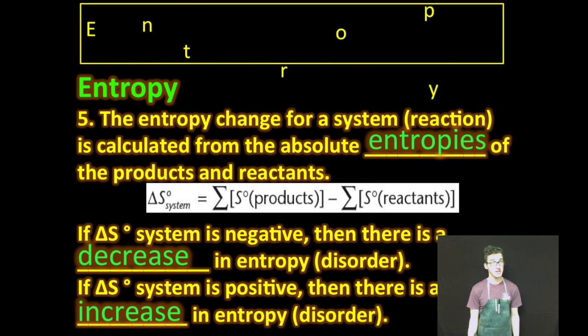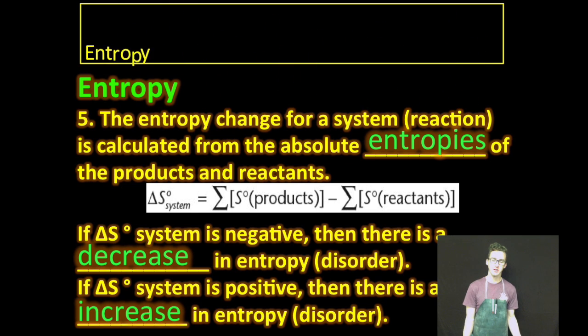And then lastly, the entropy change for a system or a reaction is calculated from the absolute entropies of the products and reactants. So very similarly to how we determine the enthalpy change for a reaction based on the enthalpies of formation, we can similarly calculate based on the entropies of the products and reactants using the formulas on your screen.